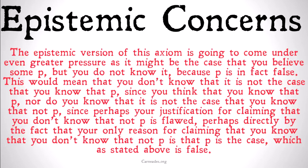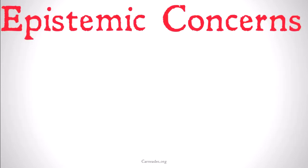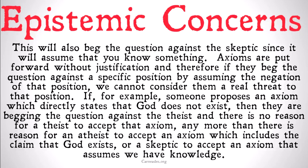Nor do you know that it is not the case that you know that NOT P, since perhaps your justification for claiming that you don't know that NOT P is flawed — perhaps directly by the fact that your only reason for claiming that you know that you don't know that not P is that P is the case, which as stated above is false since P is not the case. The point is that if you think it's possible for you to believe something but that thing to be false, this is going to be really problematic for 4.2 as an epistemic axiom.